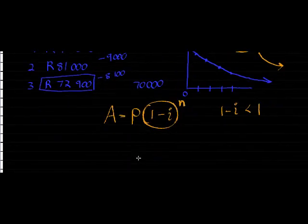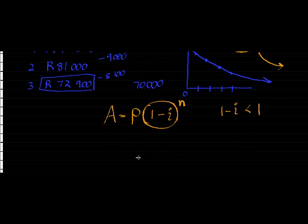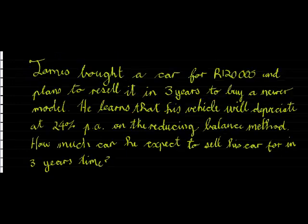Now that we have this formula, let's go look at a few examples that might show how we can use this formula to be useful. James bought a car for 120,000 and had to resell it in 3 years to buy a newer model. He learns that his vehicle will depreciate at 24% per annum on the reducing balance method. How much can he expect to sell this car for in 3 years time?